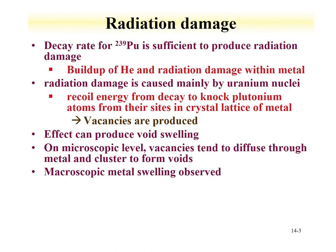We left off previously discussing plutonium metal, discussing corrosion properties, and we want to continue this discussion in the fact that plutonium is radioactive. Radiation damage can be induced in plutonium metal. The decay rate of plutonium-239 is sufficient for the production of radiation damage, and this can include the buildup of alpha particles or helium in the material, and radiation damage due to the emission of the alpha particle and the recoil of the uranium daughter.